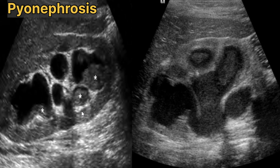Now we are going to discuss pyonephrosis. Pyonephrosis refers to an obstructed and infected collecting system. In some cases, echogenic pus can be seen filling the collecting system or layering in the dependent portion. This sonogram shows moderate hydronephrosis with echogenic material filling the collecting system, consistent with infection — that is, pyonephrosis.